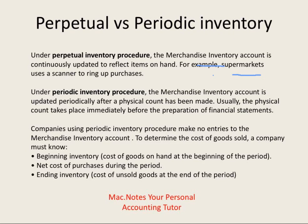But there are also many companies that have very small items and can't afford to have barcodes on them. So they use what's called the periodic inventory system, where the merchandise inventory is updated only at the end of the period when a physical count is taken to determine how much remains unsold.